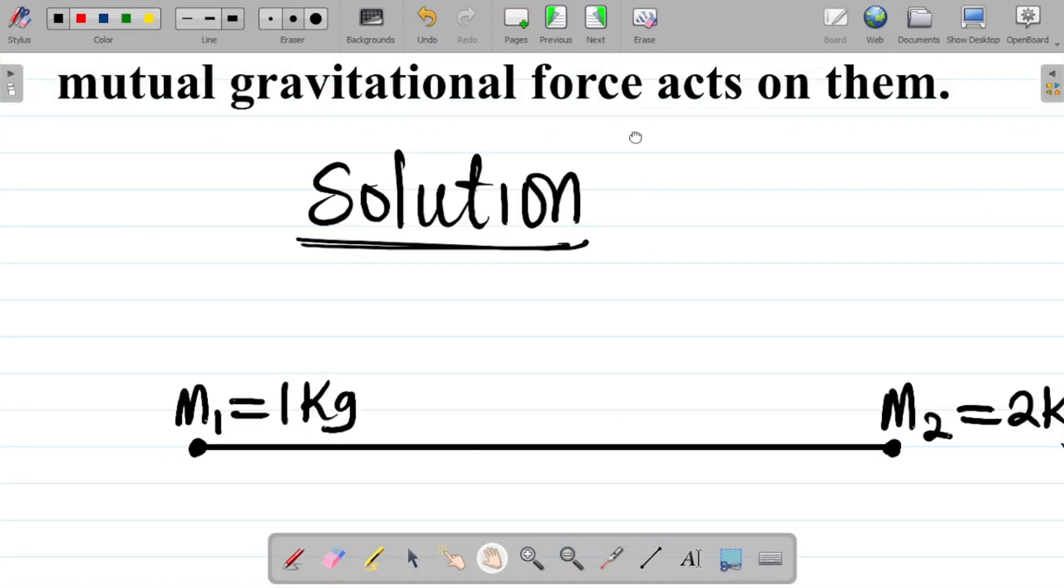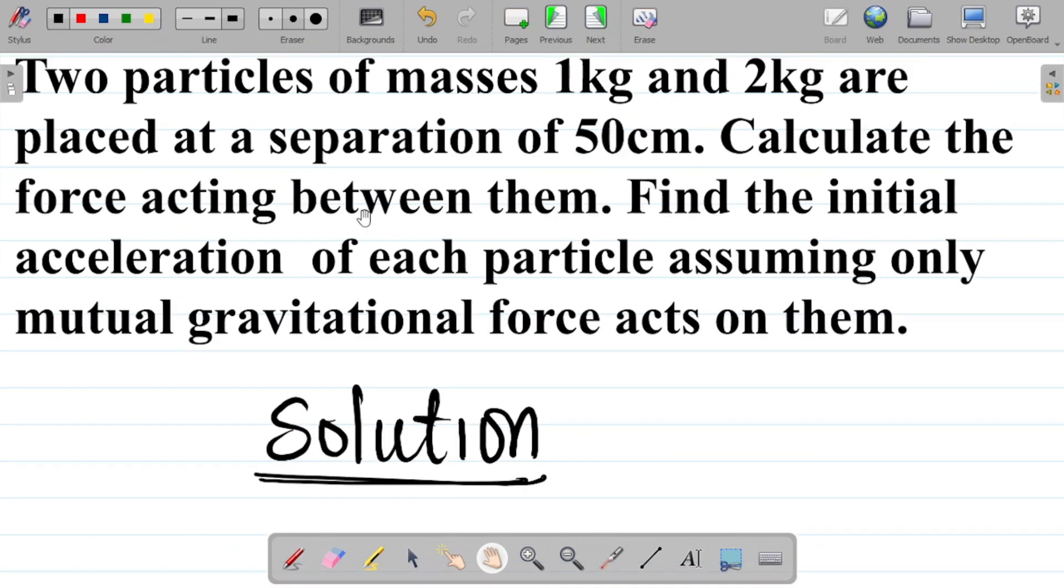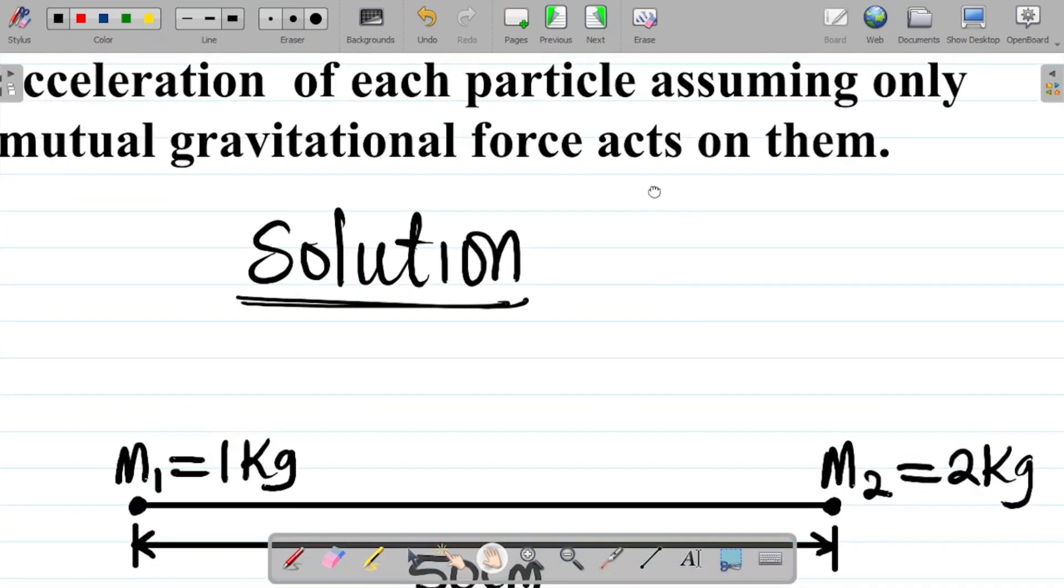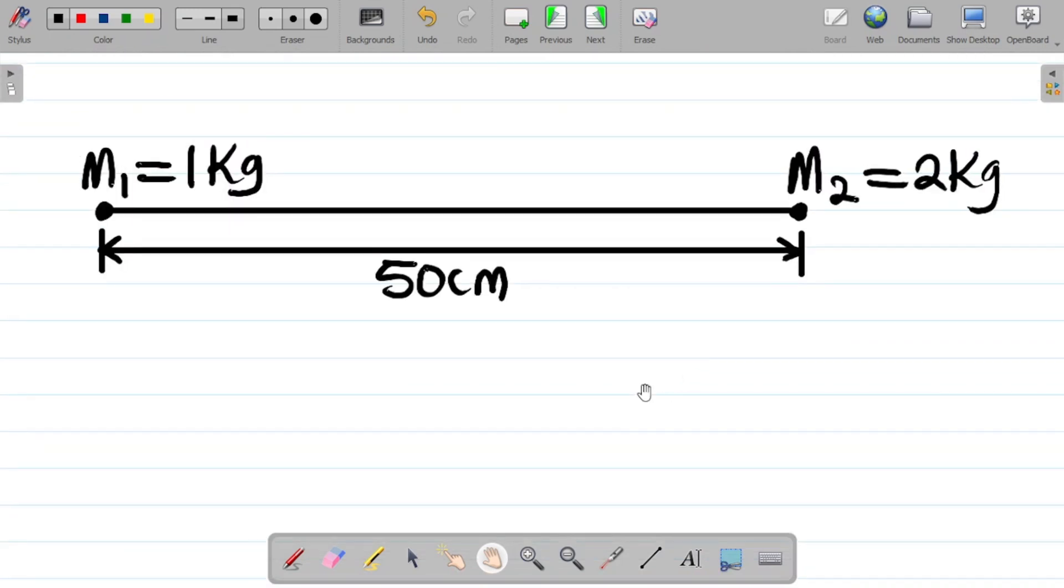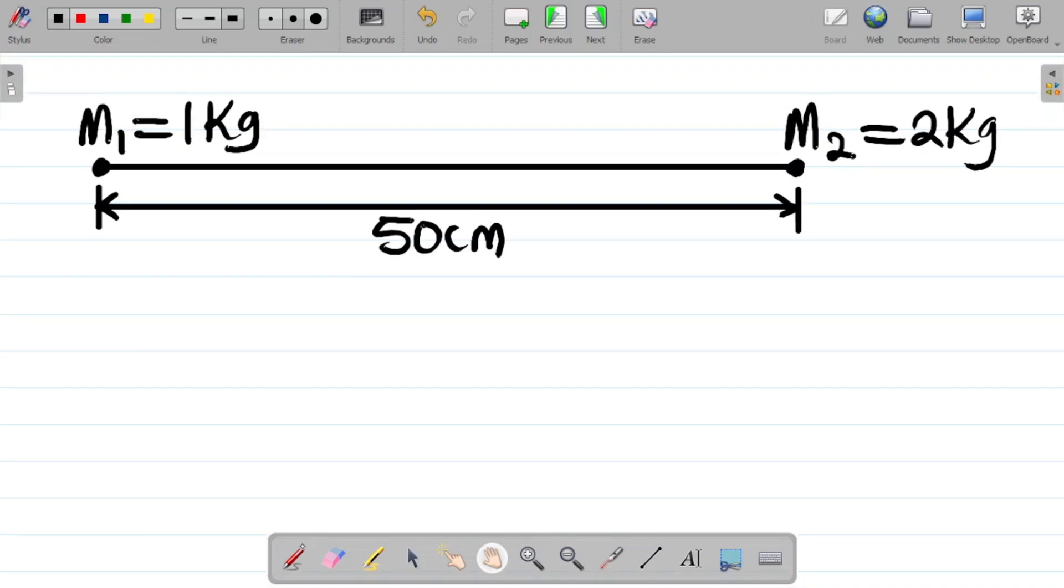And they said their distance of separation is 50 centimeters. So this distance between them from here to here, this is 50 cm. You're asked to find the force of attraction or the force acting between them. Let's get the force acting between them. For this case here, I would have to obviously use Newton's law of universal gravitation.